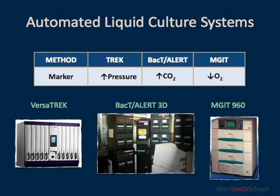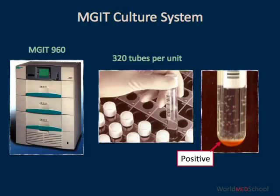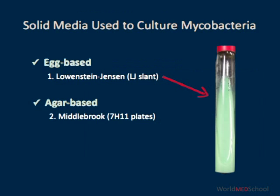This slide shows three different commercial automated liquid culture systems. These systems detect different markers of growth. The TREX system detects change in pressure in the culture headspace. The BacTAlert system detects production of carbon dioxide by bacteria, and the MGIT system detects consumption of oxygen by the bacteria. In the MGIT tubes, also known as mycobacterial growth indicator, as bacteria grow, they consume oxygen, and as oxygen is depleted, a reporter starts to fluoresce at the bottom of the tube and indicates a positive result.